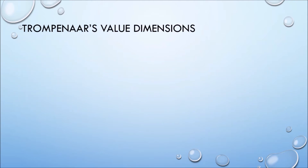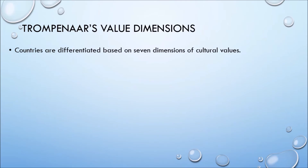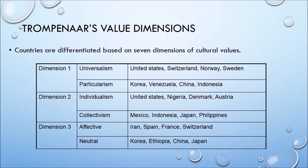Trompenaar's value dimensions: Countries are differentiated based on seven dimensions of cultural values. Dimension 1 — Universalism: United States, Switzerland, Norway, Sweden. Particularism: Korea, Venezuela, China, Indonesia. Dimension 2 — Individualism: United States, Nigeria, Denmark, Austria. Collectivism: Mexico, Indonesia, Japan, Philippines. Dimension 3 — Affective: Iran, Spain, France, Switzerland. Neutral: Korea, Ethiopia, China, Japan.